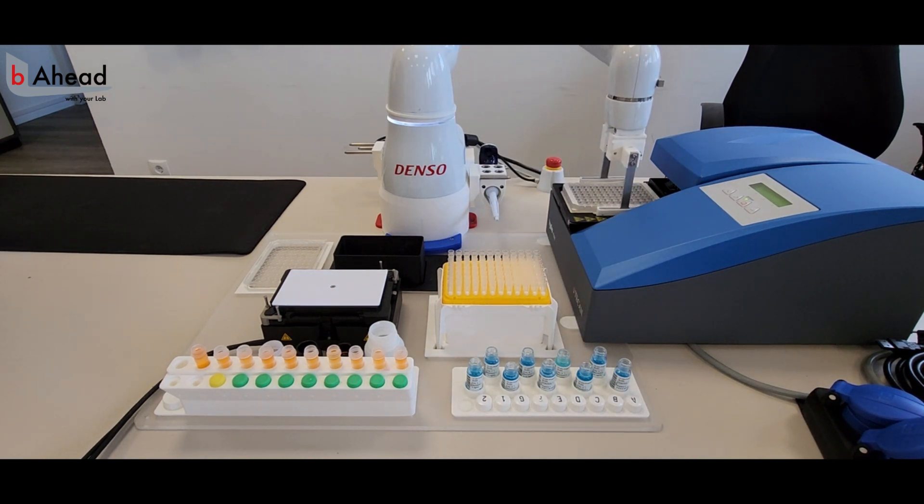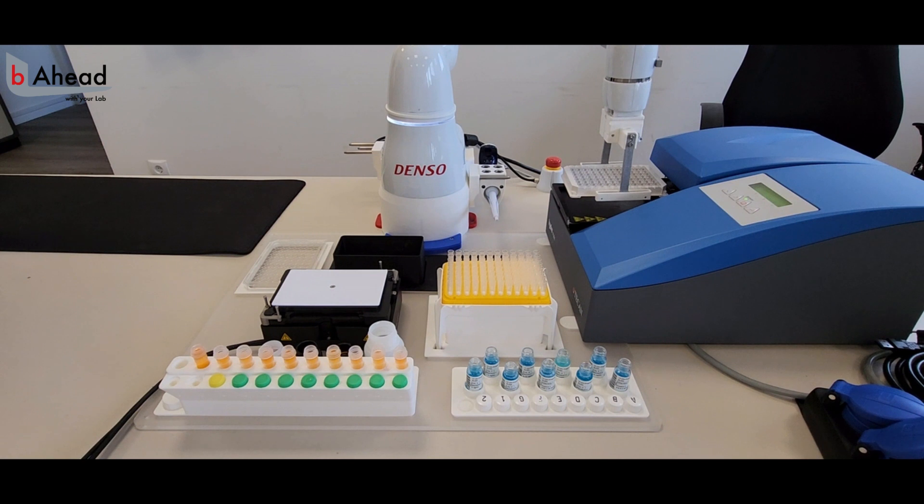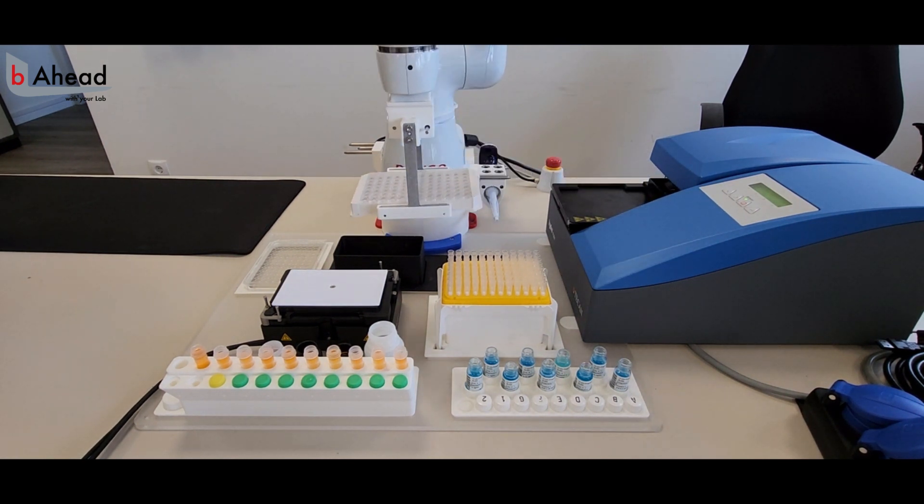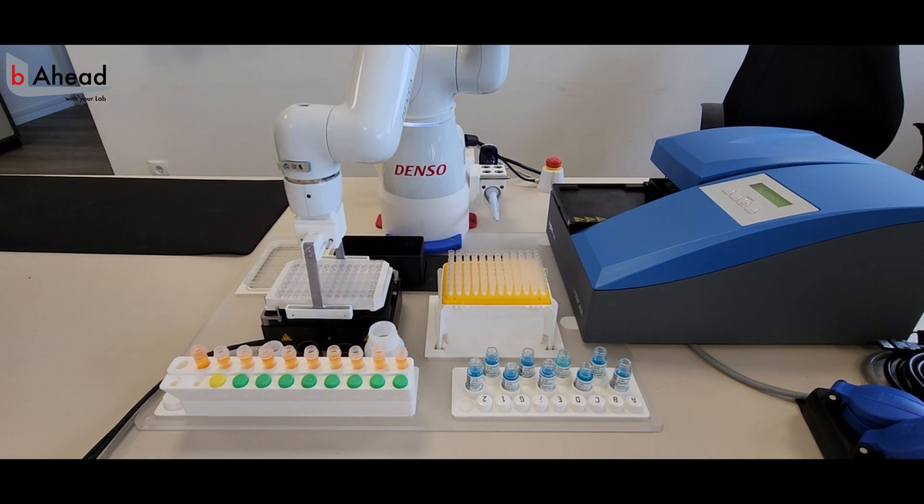After washing is completed, the second pipetting block can start. The microplate gets taken out of the washer and is placed back onto the mixer before buddy switches back to the pipette.